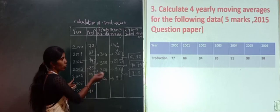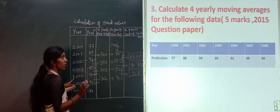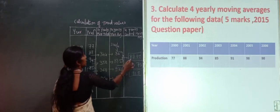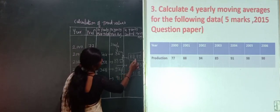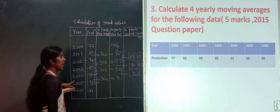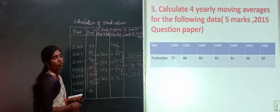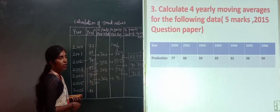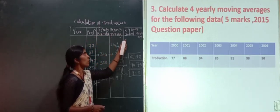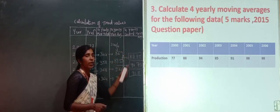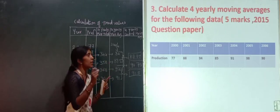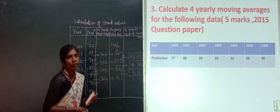So under the 4 yearly moving average method, the trend values are obtained for the years 2002, 2003, and 2004, which are 87.75, 90.75, and 91.5. The table has columns: year, production, 4 yearly moving total, 4 yearly moving average, and 4 yearly centered moving average, because we need exactly corresponding years to show the trend values graphically.